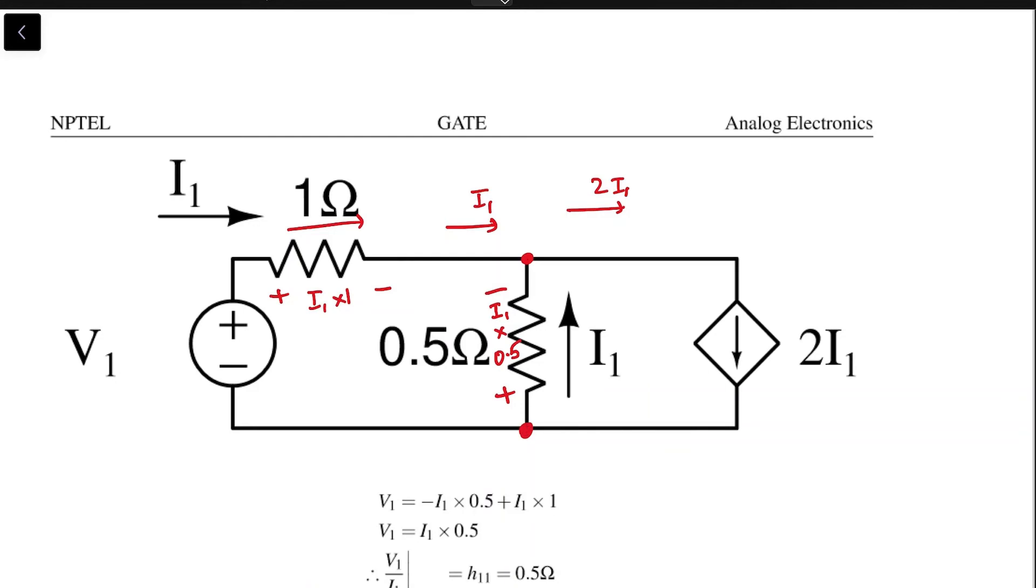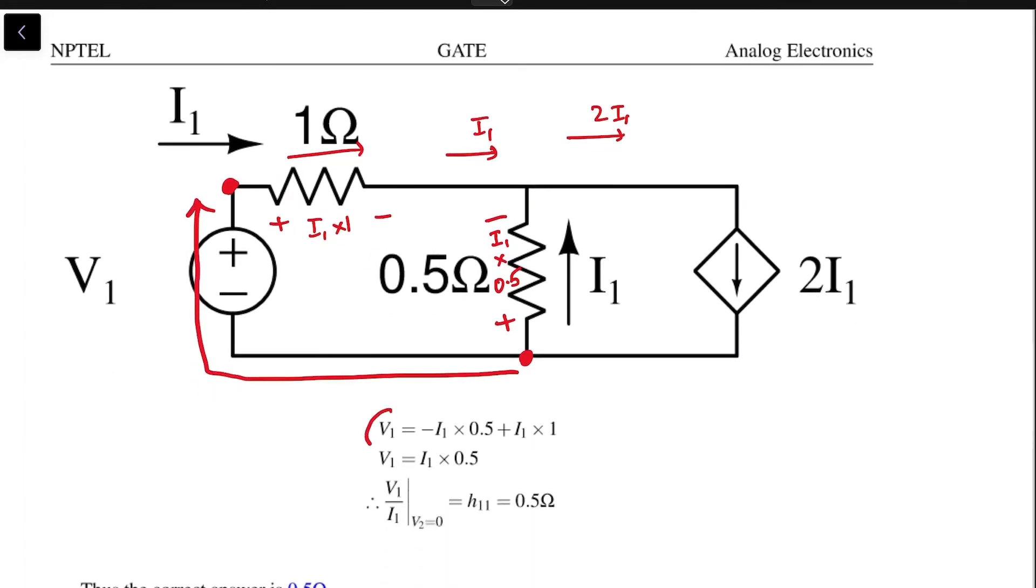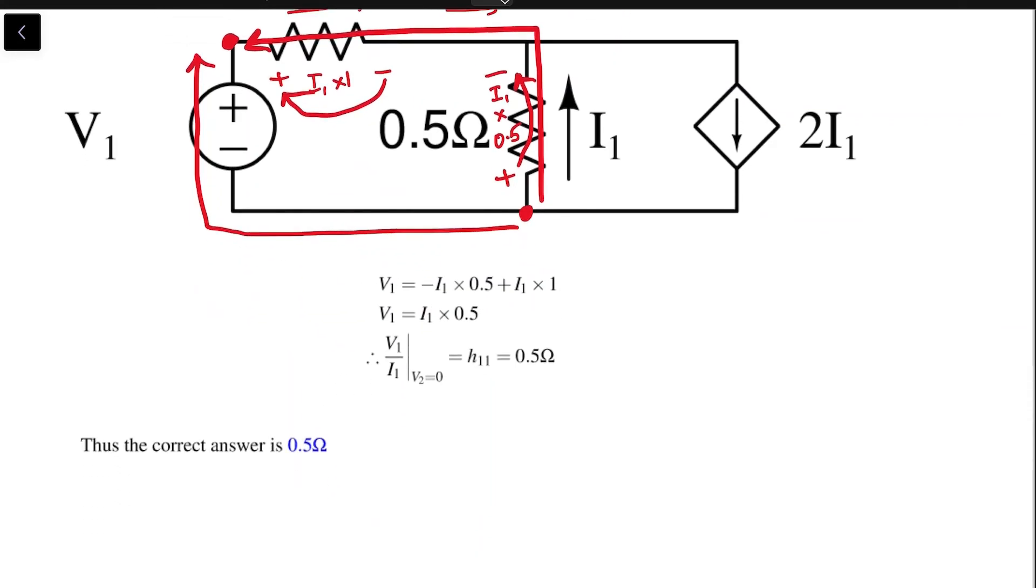Now, going from this node to this node in two ways - one way is through this path, we get that the voltage at that node should be v1 with respect to the bottom node. Going through this path, since you are going from plus to minus, it's minus i1 times 0.5, and since you are going from minus to plus, it's plus i1 times 1. So finally, you get that v1 equals i1 times 0.5.